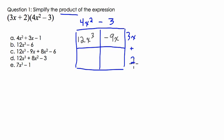Over in the bottom left, we have two groups of 4x squared, that's 8x squared. And then we have two groups of negative 3, that's negative 6.